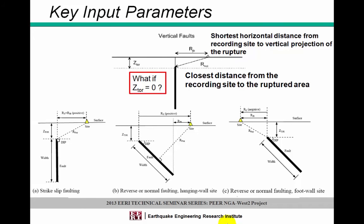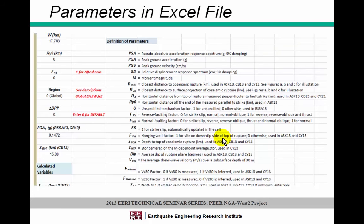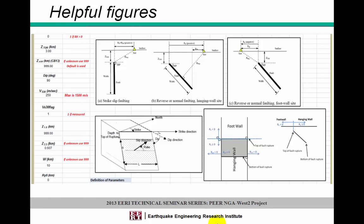For example, if you have a vertical strike-slip fault with no depth to the top of rupture, then the closest distance from the recording site to the ruptured area and the shortest horizontal distance from the recording site to the vertical projection of the rupture will be the same. That will not be the case for a dipping fault — if you're on the hanging wall side, your Rx value goes positive. You don't have to worry about all these things though, as all parameter definitions are given in the spreadsheet on the main sheet, along with helpful figures related to the source mechanism.